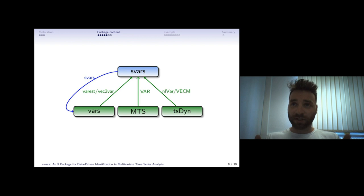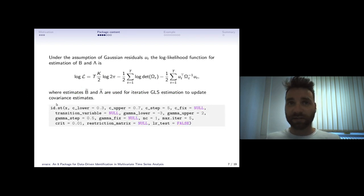For instance check for the lag order and perform Granger causality analysis. This is all in these packages vars, mts, and tsdyn. You can do your reduced form estimation, obtain an object of class var est, and this object can be passed to our svar function.